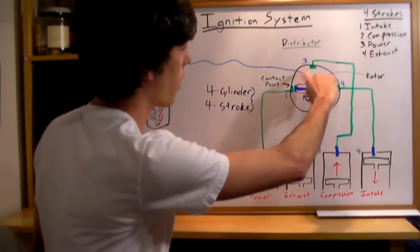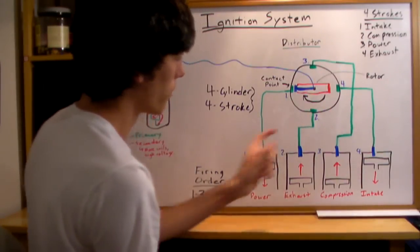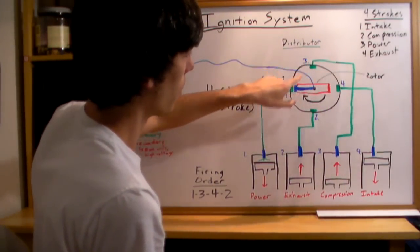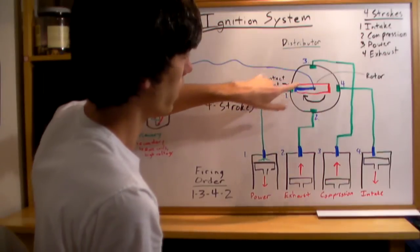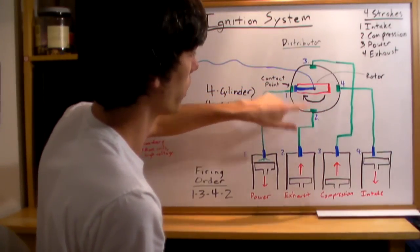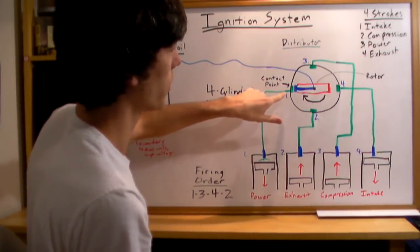As this rotates around, you've got one, three, four, two. Each of these, three will be one step behind one, four will be two steps behind one, and two will be three steps behind one.